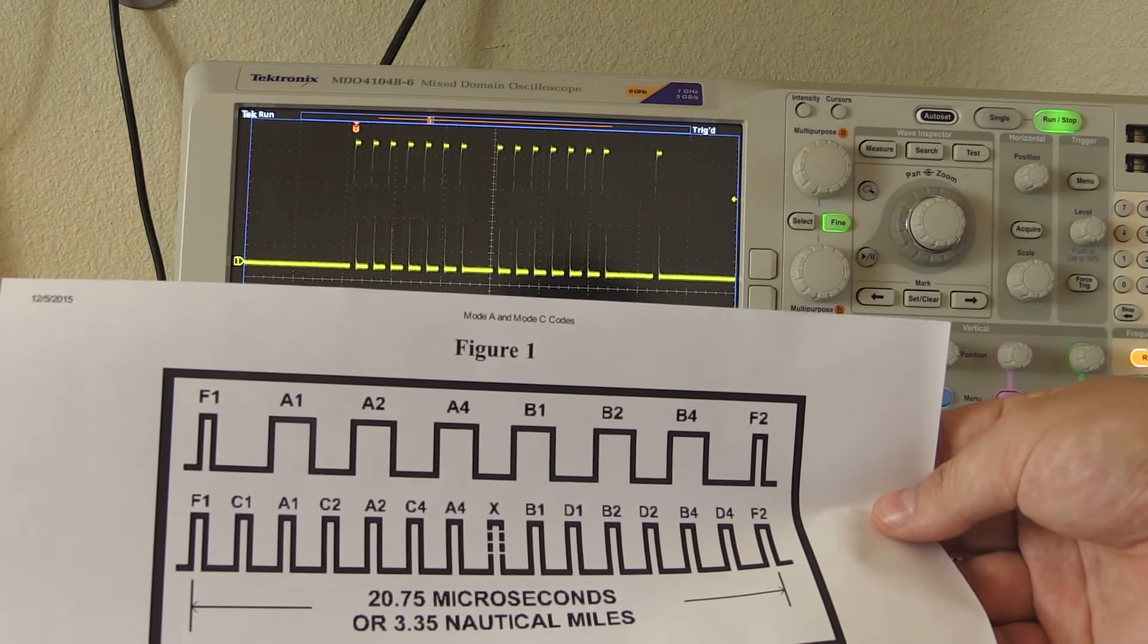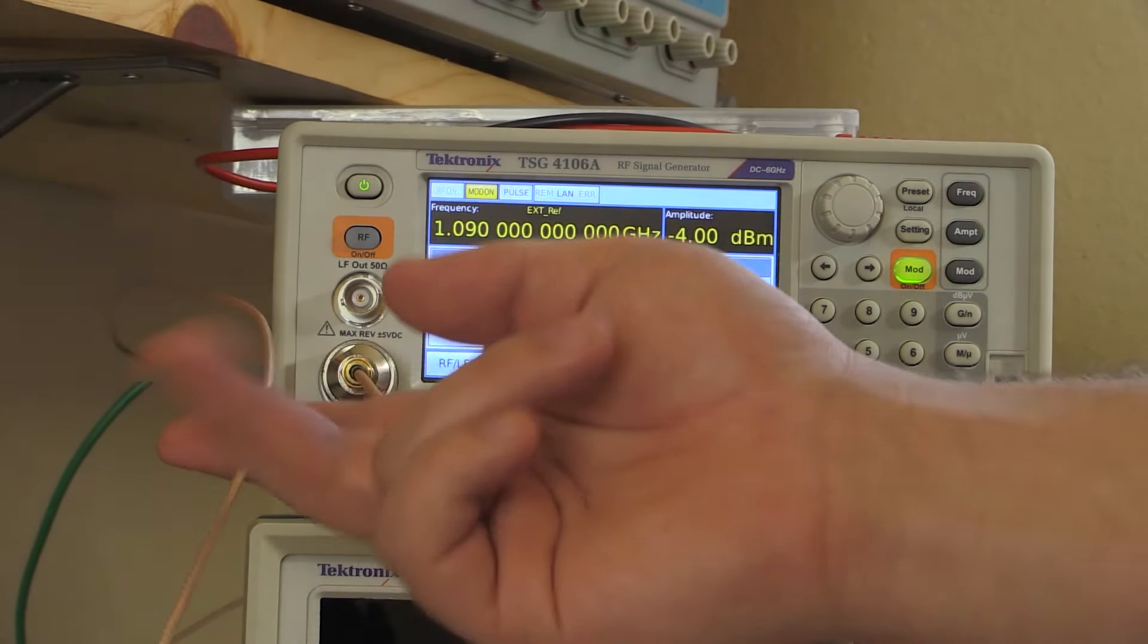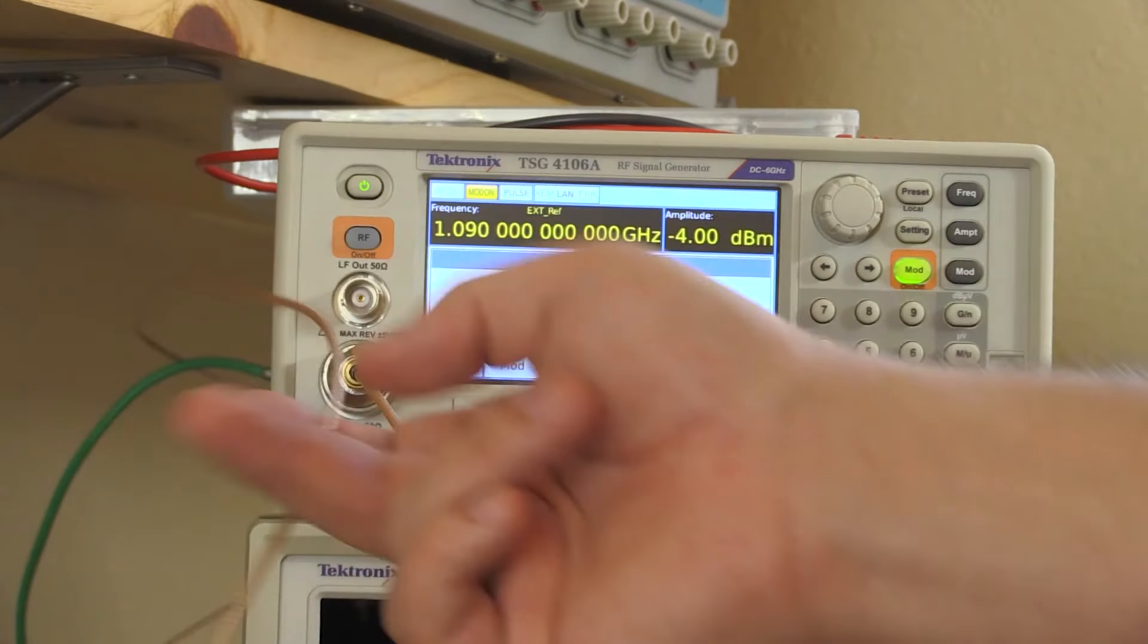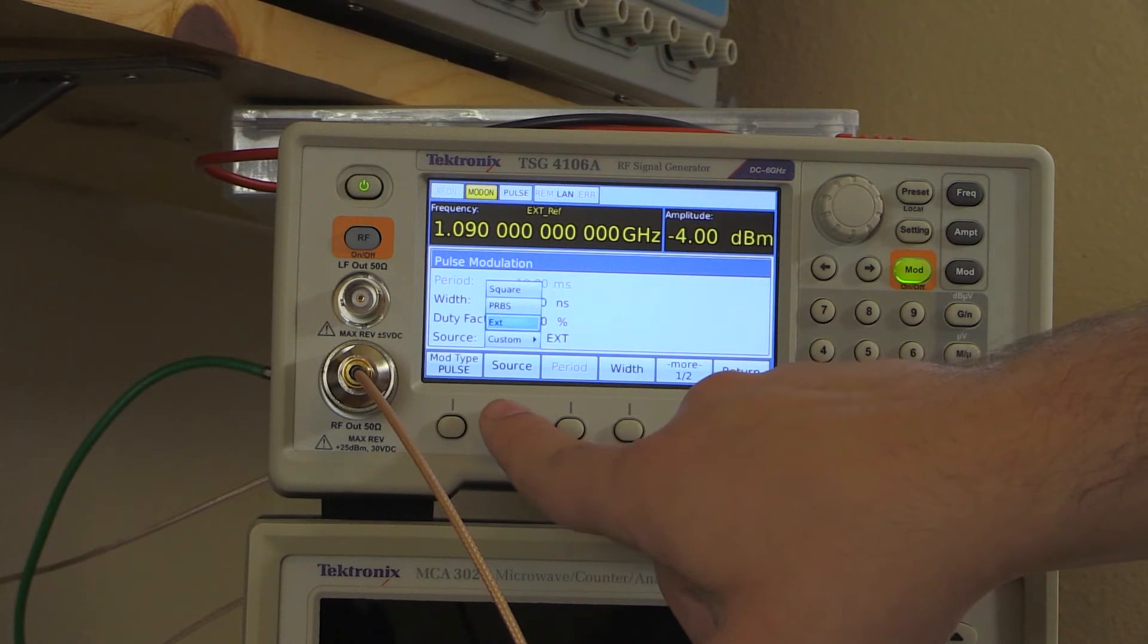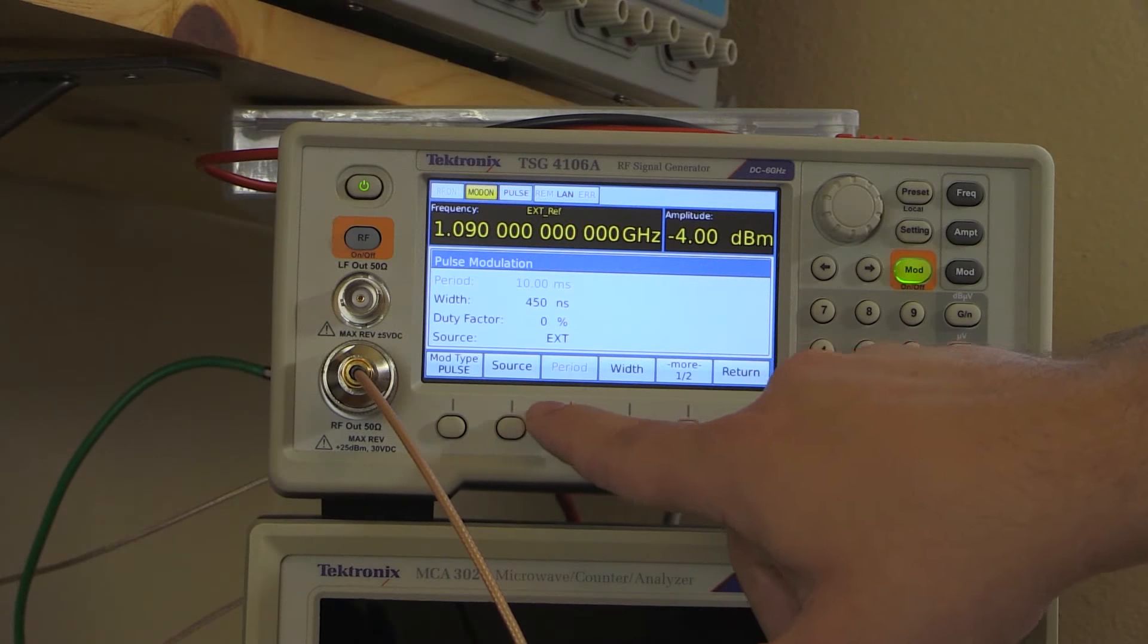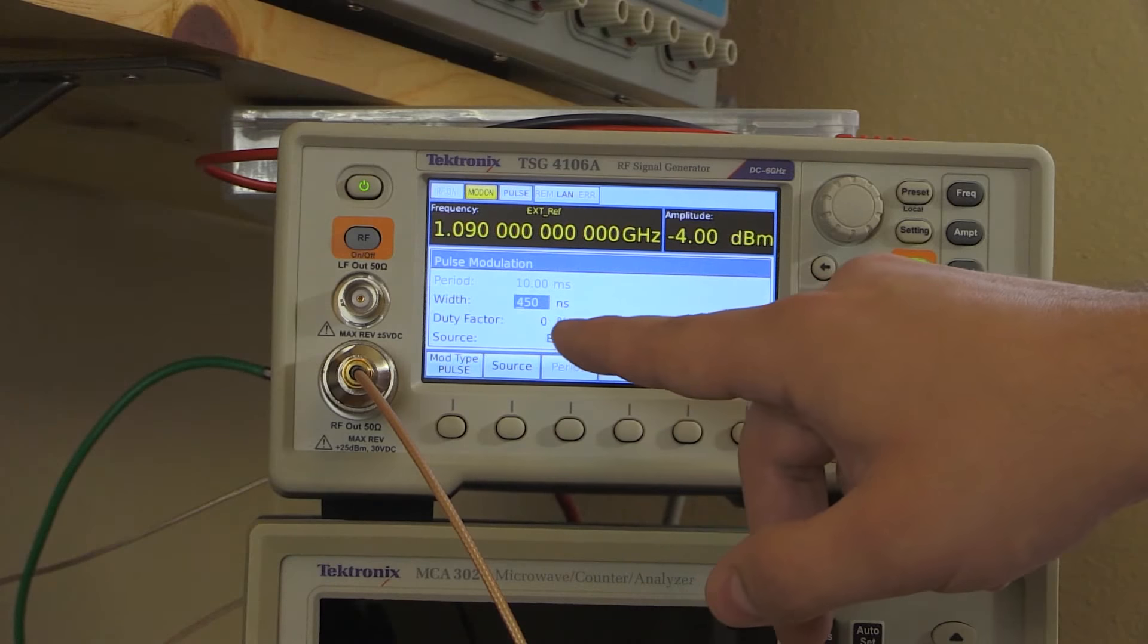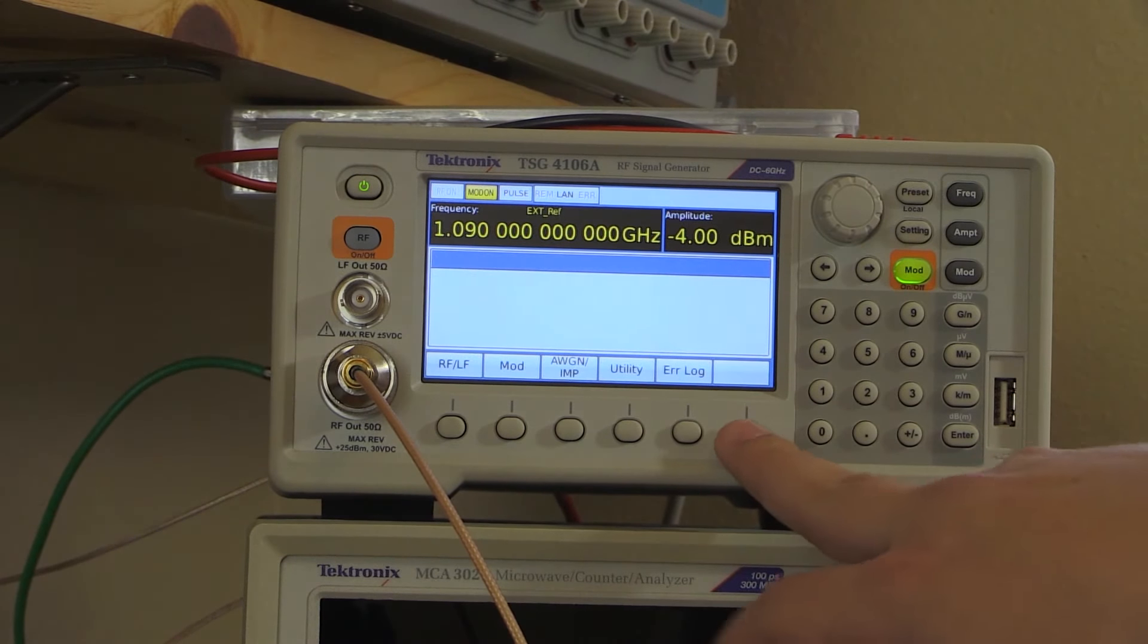So now we got to turn that into a RF pulse signal. So I'll switch over here to the TSG. So I got the output of the AFG going into the back of the analog modulation input of the TSG 4106. Frequency is set to 1090 megahertz. That is the frequency those transponders respond on. Then our modulation is set up as modulation type pulse. Source is external. Hang on, I missed something. Width. That's what I wanted to look at. The pulse width is 450 nanoseconds. We got that set right here. Source is external. Everything is the way we want it to.